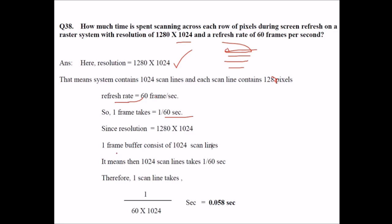So a frame buffer has 1024 scan lines. This means 1024 scan lines will take how much time? So you have to divide 1 by 60 into 1024. This will be the time for one scan line.